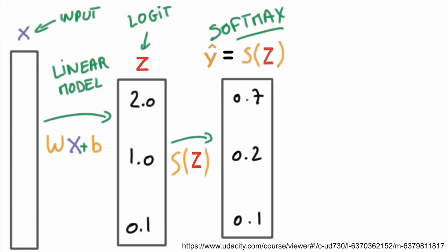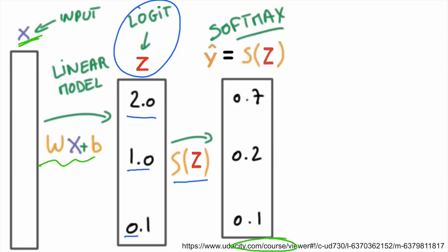Let's summarize softmax one more time. From our input, we run a linear model which produces logits — some numbers and values. Then we apply softmax to produce probabilities.